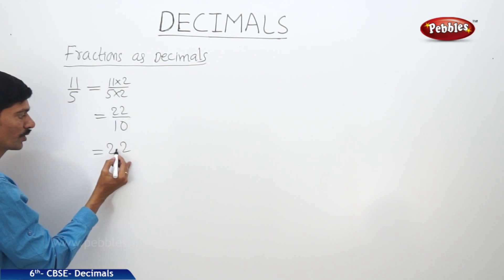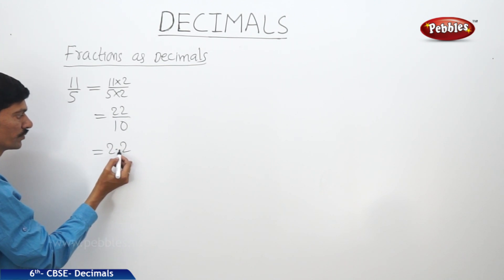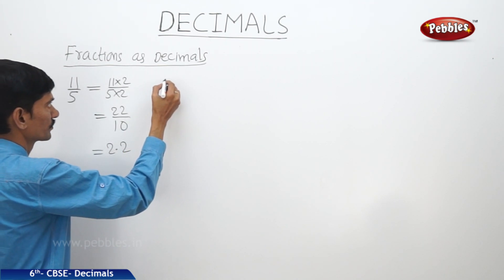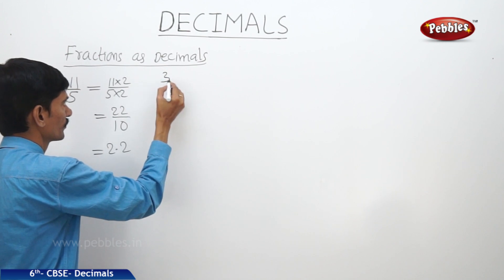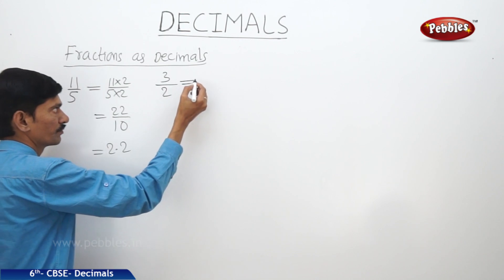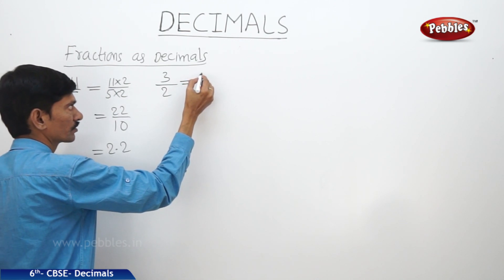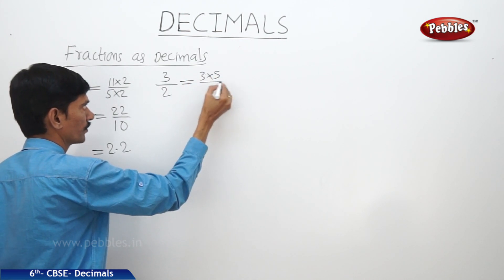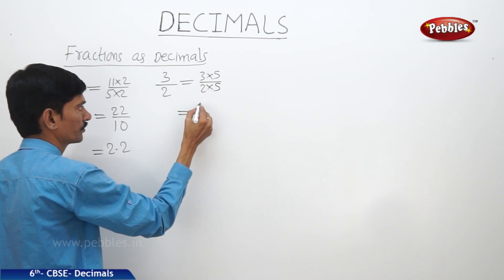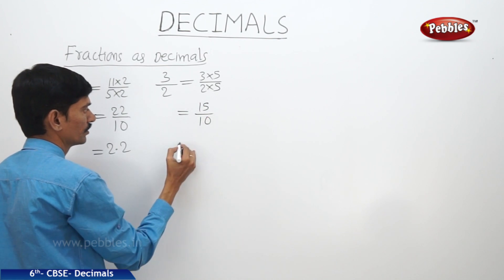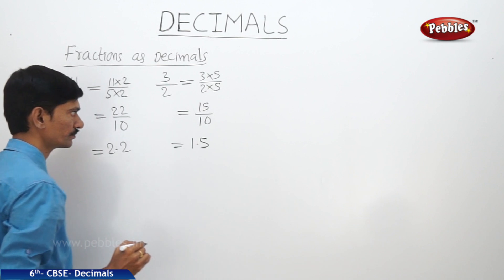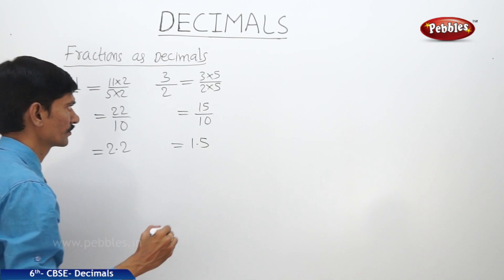Let us take another example: three by two. To make the denominator ten, we multiply by five: three times five by two times five equals fifteen by ten. This can be written as one point five.